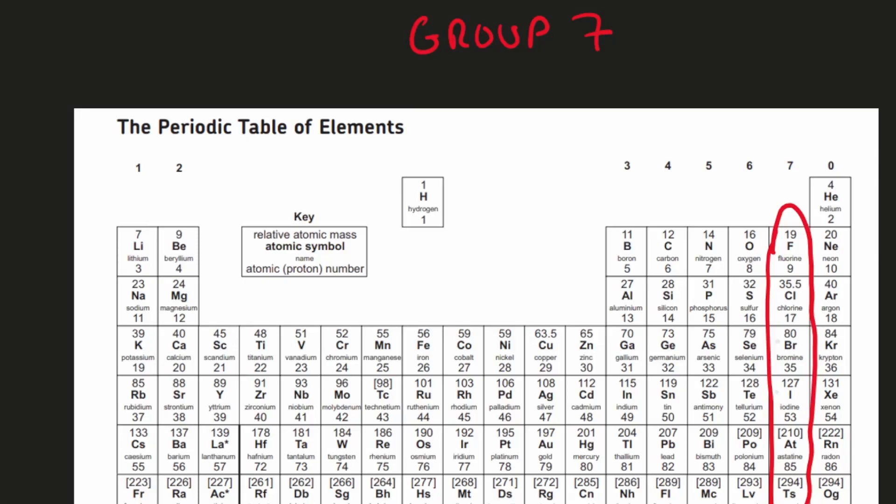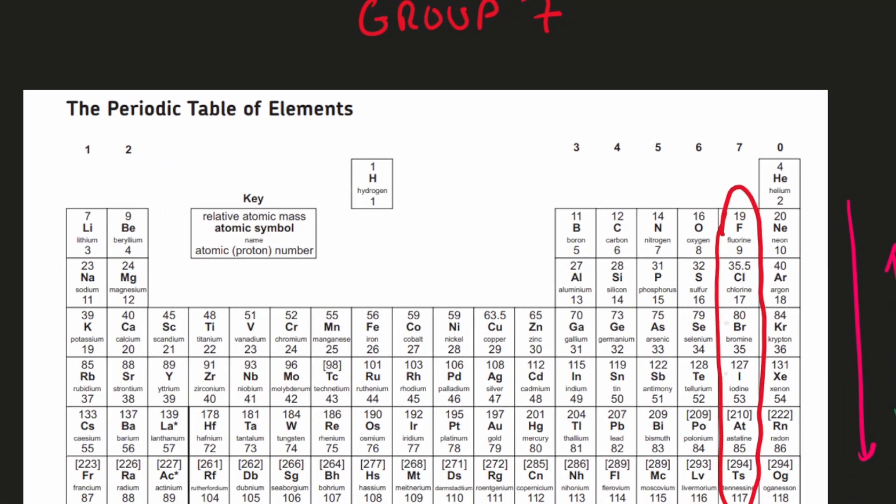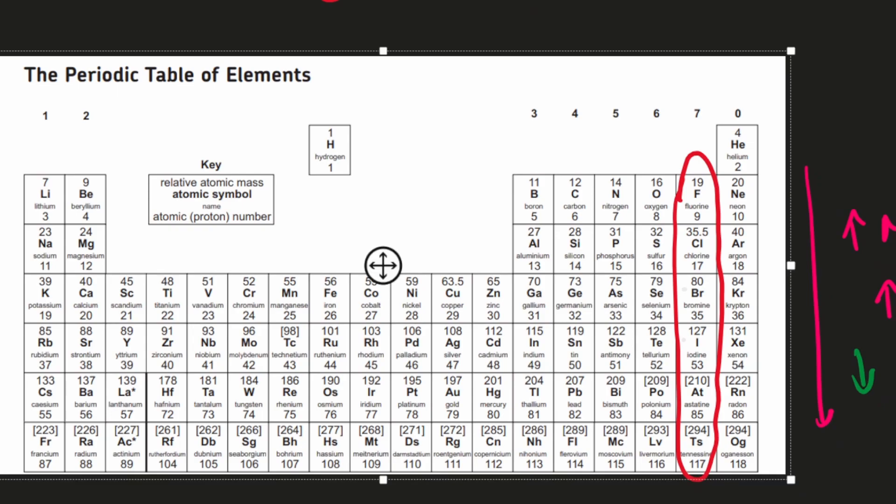Okay, so now let's look at Group 7 elements. Group 7 elements are over here and you have fluorine, chlorine, bromine, iodine, astatine, and this one at the bottom which I'm not going to try to pronounce for now.